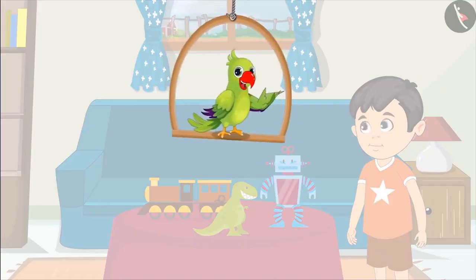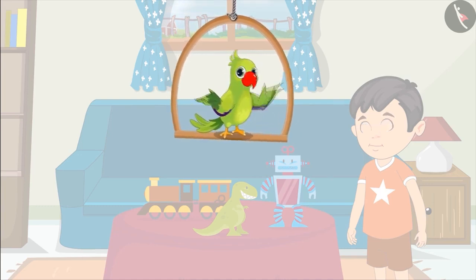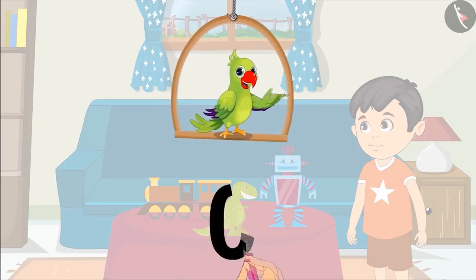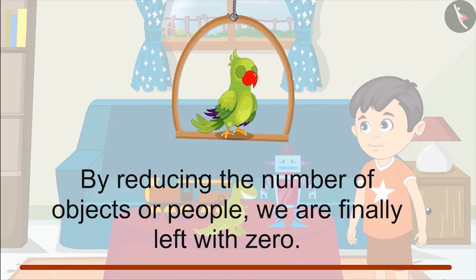So did you see? There are no friends left. In such a situation, what can you say about the number of Chotu's friends? Not a single friend being there means that at this time there are zero friends at his house. So by reducing the number of objects or people, what we are left with finally is the number zero.